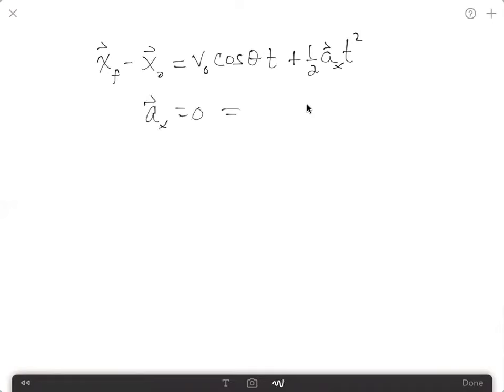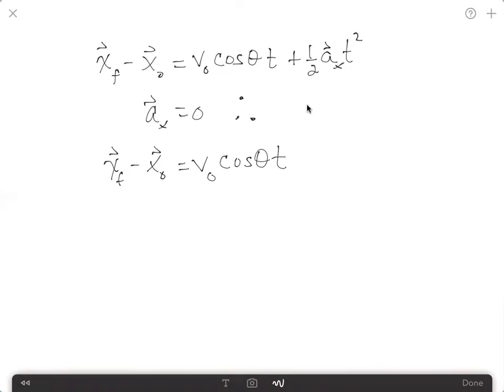This implies, or we can therefore write that x_f minus x_initial is equal to the initial velocity. As long as we know the angle of launch and the time of flight, we can calculate this equation.